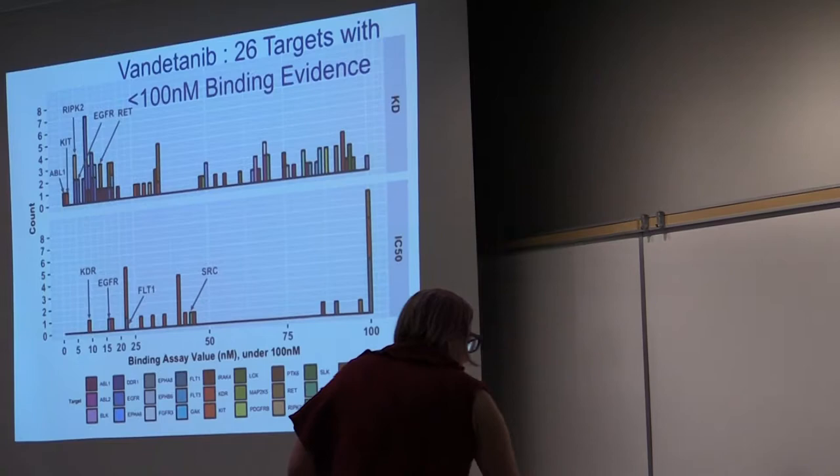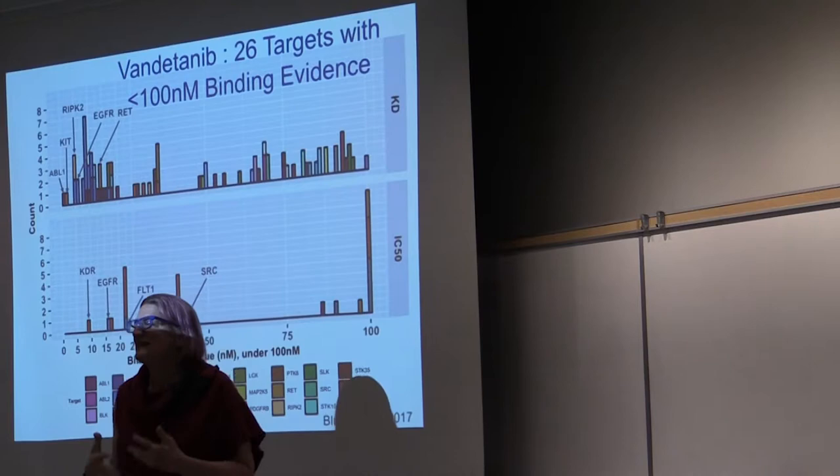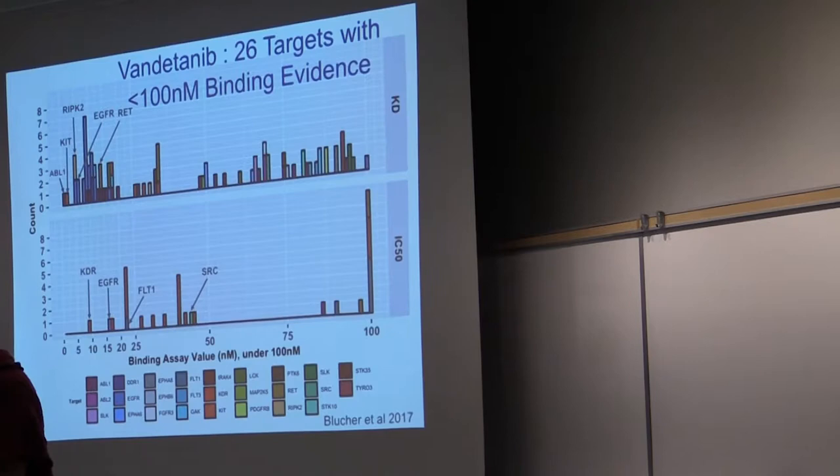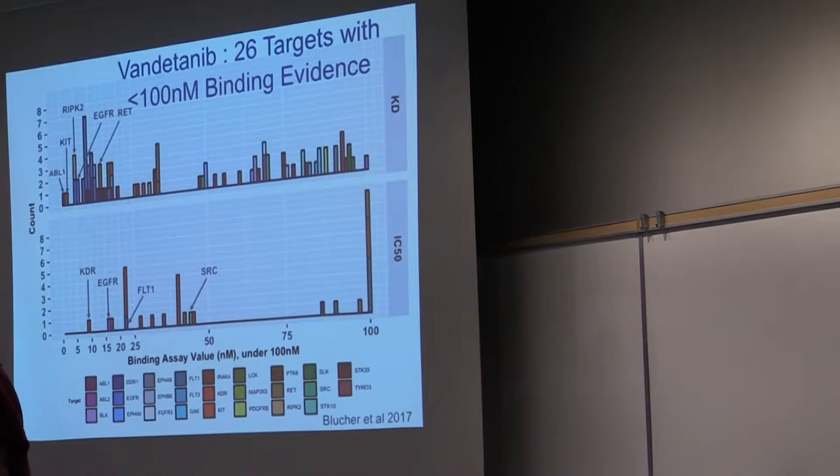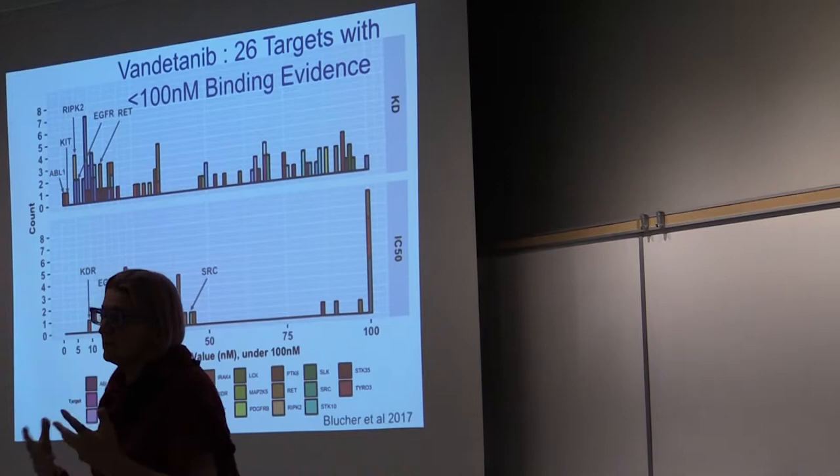Now we can look at another drug, and unfortunately now it gets a little bit more messy. If we're in that same therapeutic range, we have up to 26 different targets. We have drugs that are much messier than this. So if we're now thinking about trying to model this, you now know that within a realistic therapeutic range, you have to think about 26 other targets in terms of off-target effects that could impact your model. And this has implications for combination therapies and repurposing.